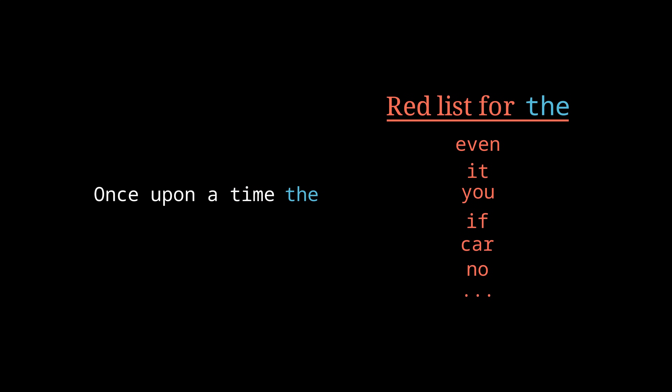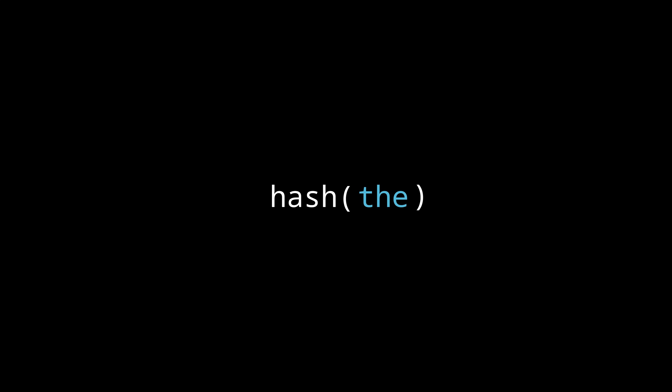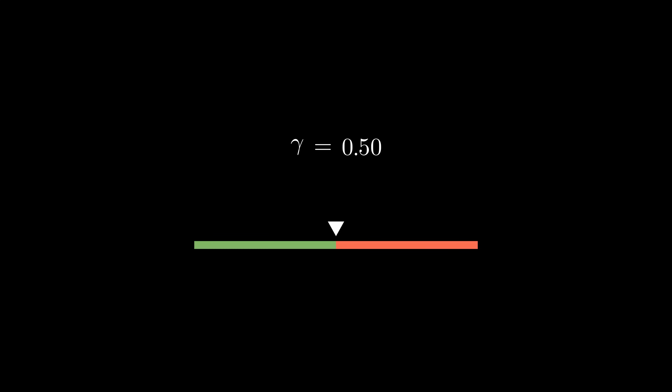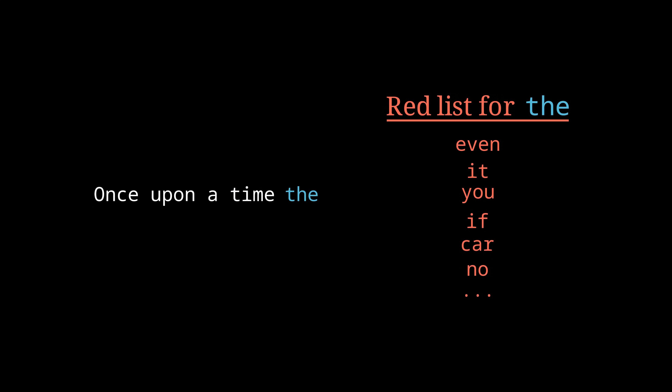A better approach is to determine this red list for each previous token differently. We take the last token of the current prompt and derive a rule on how to partition the vocabulary into the red and green lists from that. That way, the model still has the chance to choose all tokens at some point. We hash the token, use the output as a seed for a deterministic random number generator, and partition the vocabulary based on that. We can introduce a parameter gamma, which corresponds to the proportion of the size of the green list — for example, splitting 40/60 or 90/10. This also has the nice side effect that we don't rely on the underlying language model, so it is transferable to other models and no model access is required when detecting the watermark.